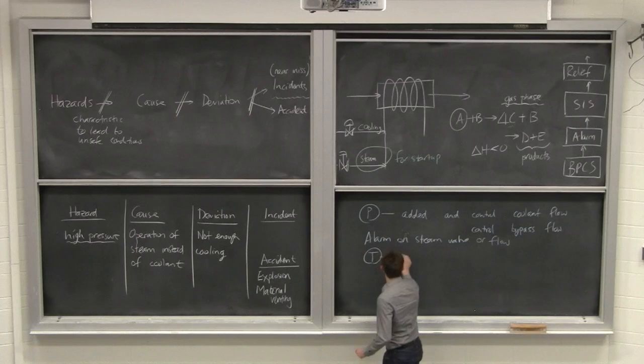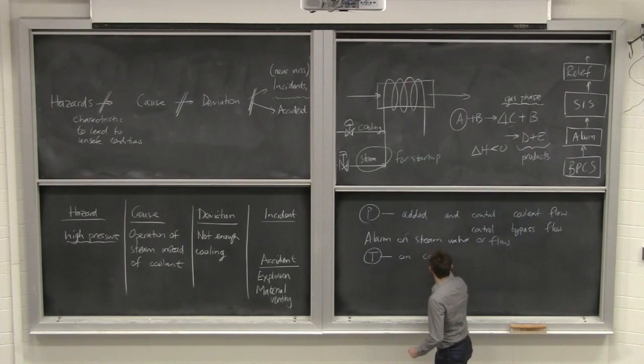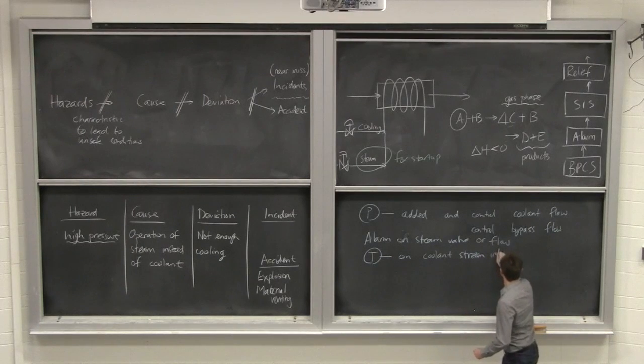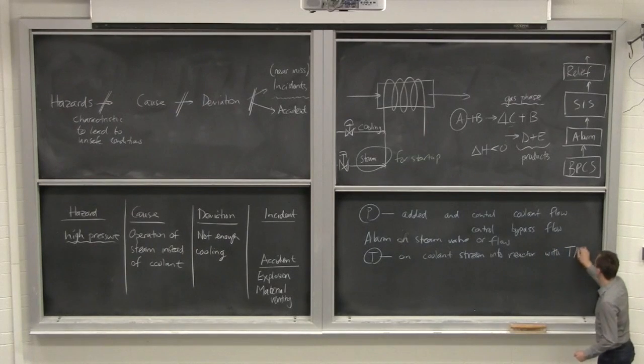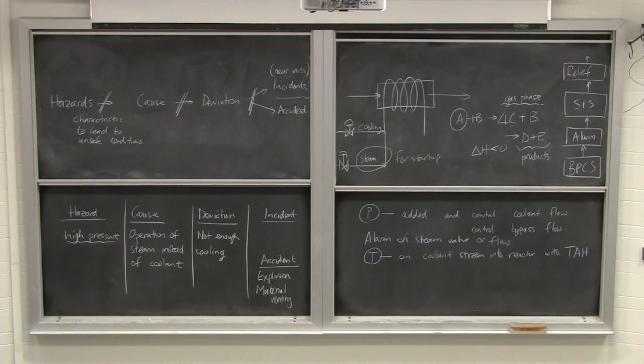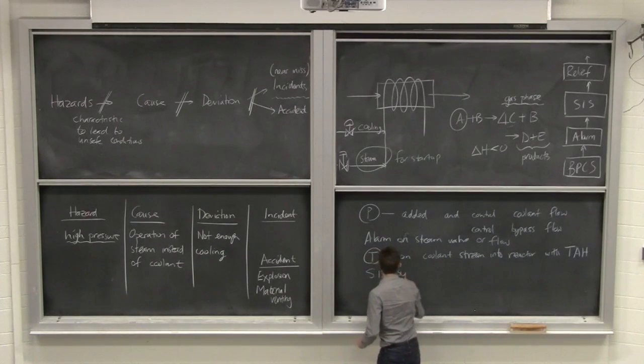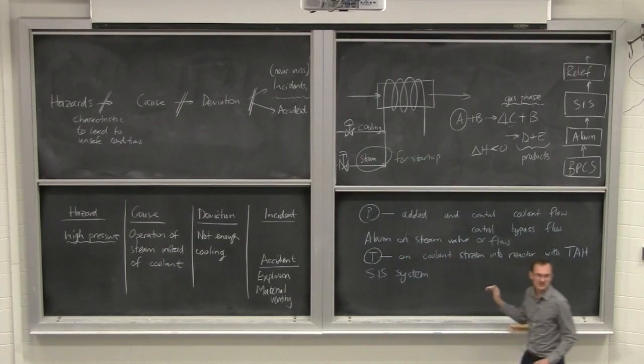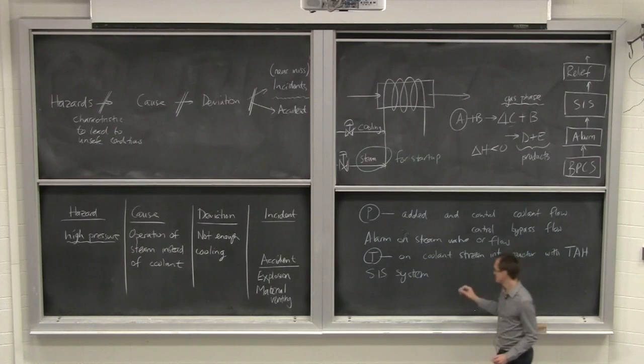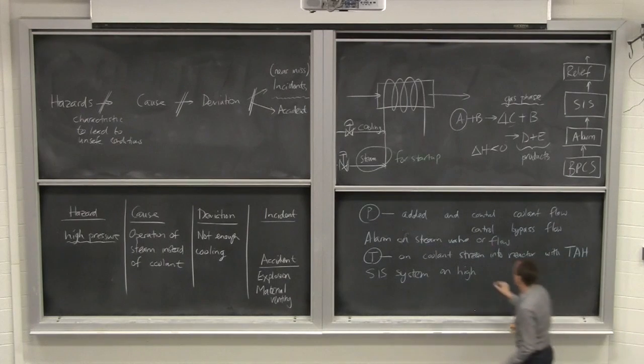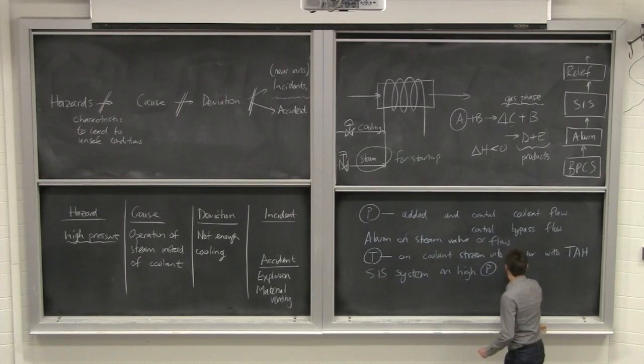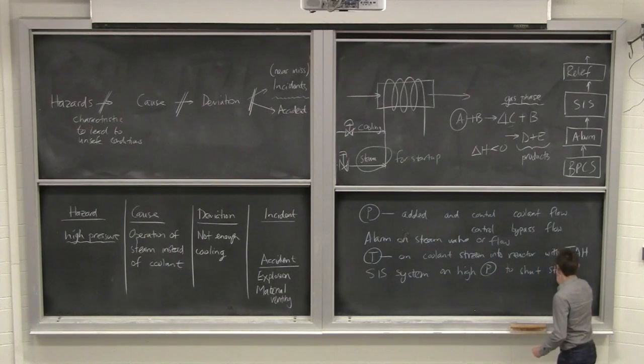So T on coolant stream into reactor with TAH, so temperature alarm high. Could you add a SIS system to shut a valve, or to shut that valve? Is it coming in? SIS system triggered based on high temperature or pressure? Pressure, okay.